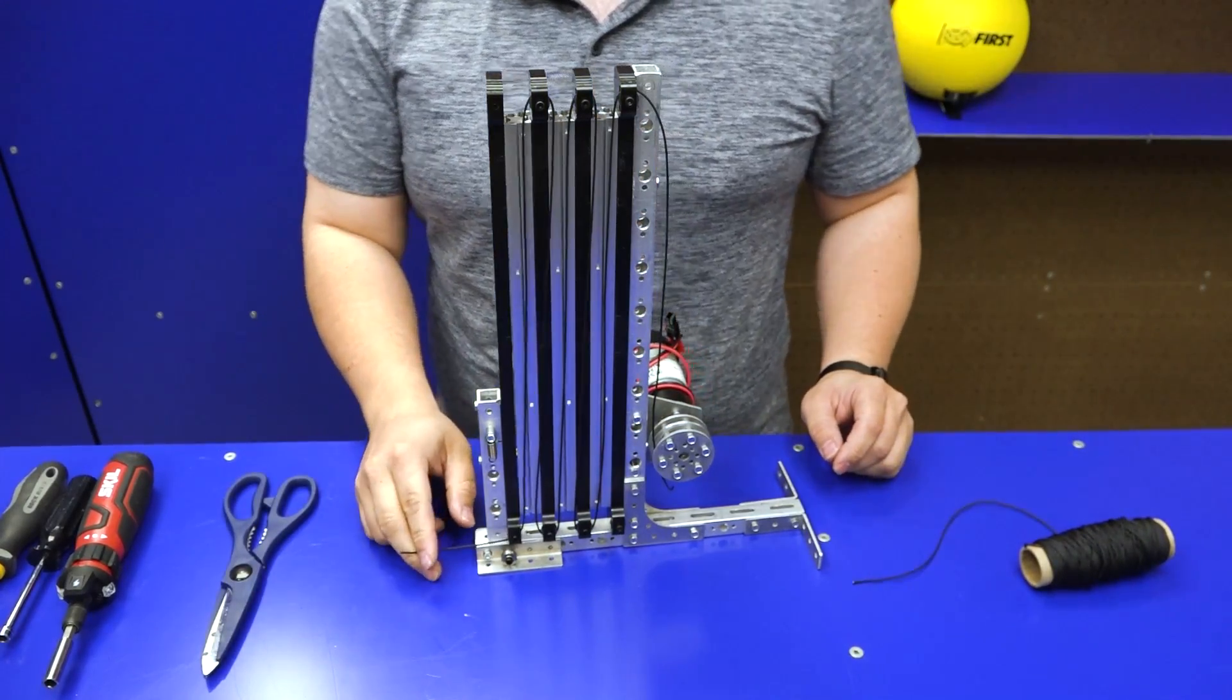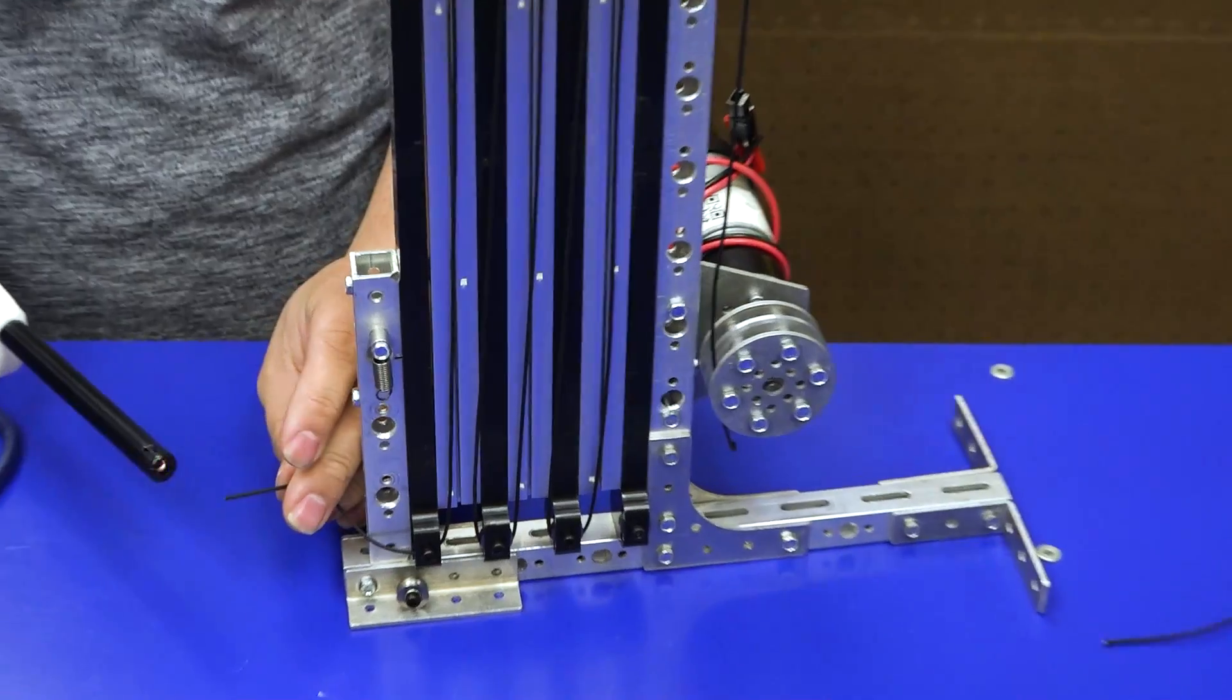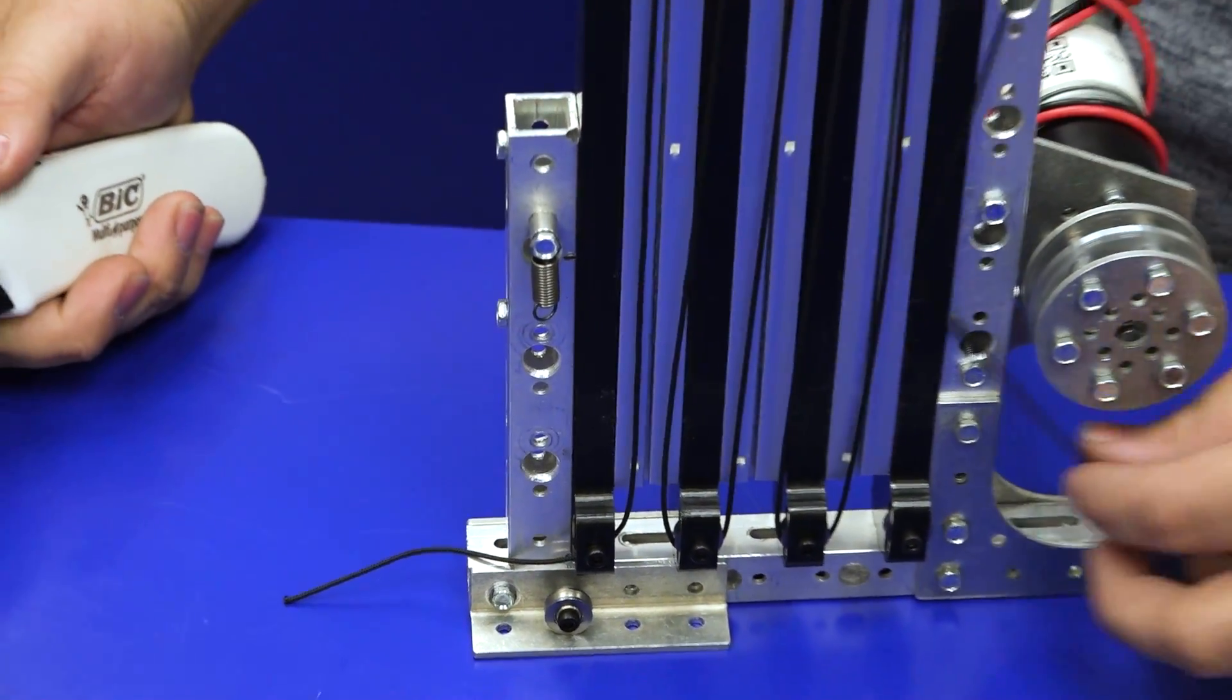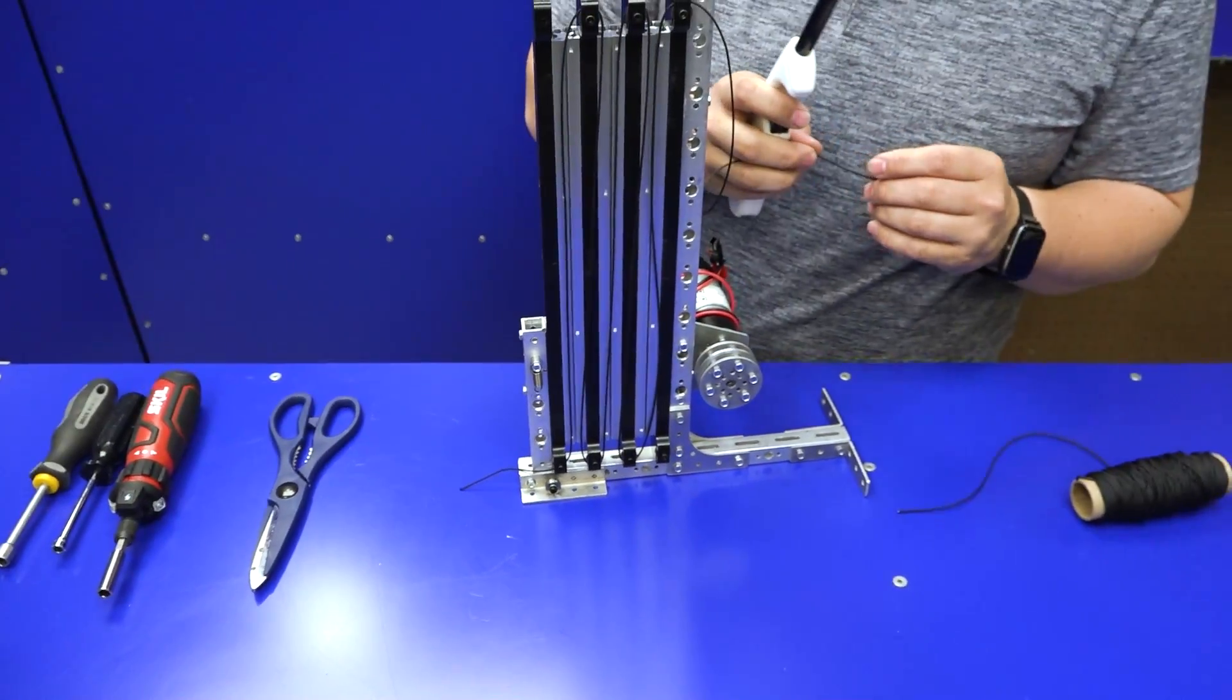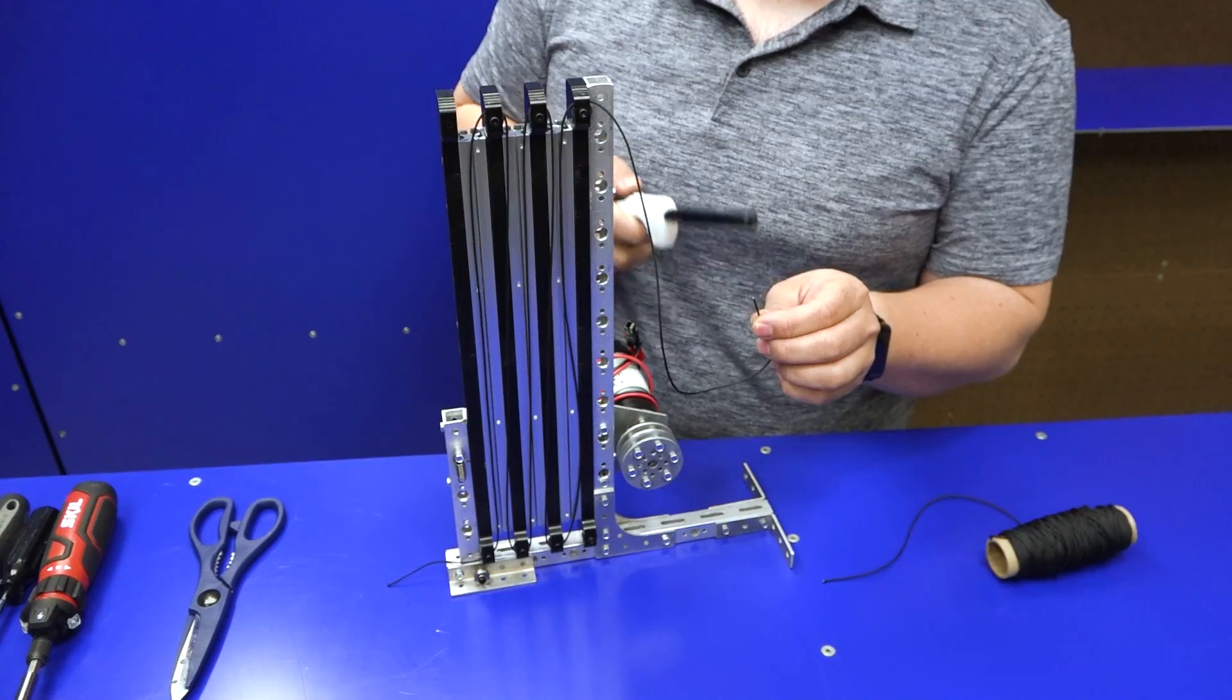With the ends of cut string, generally we like to suggest heating it up to make sure that the end doesn't have any extra little pieces of small string that will make it hard to tie off or fit through anything.